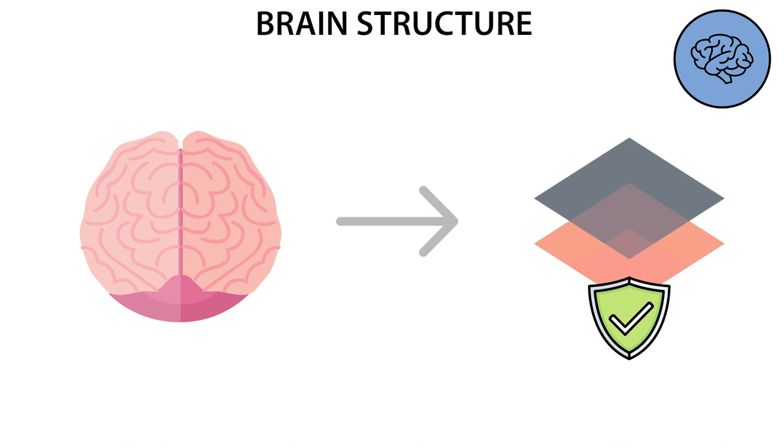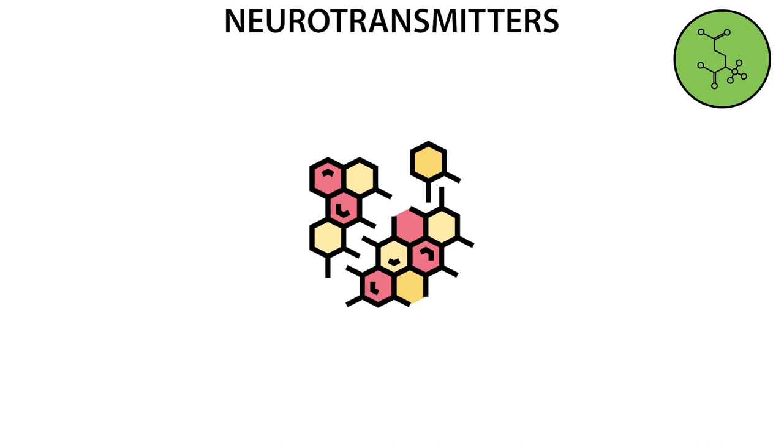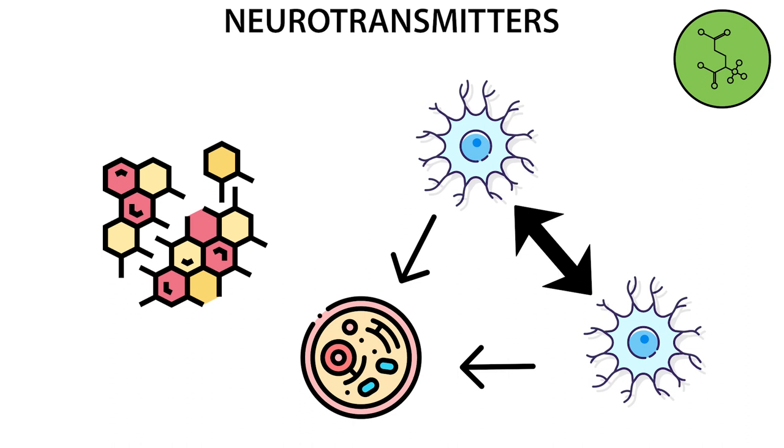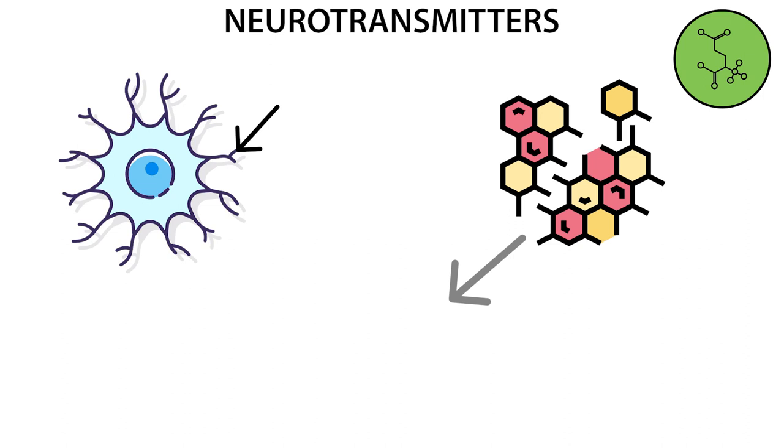Neurotransmitters are chemical substances that transmit signals between nerve cells, neurons, or between neurons and other cells of the body. They are secreted from the nerve ending of a neuron and act on the receptors of the next neuron or target cell, thereby transmitting a nerve signal.